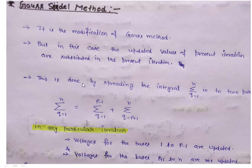This can be done by splitting the summation into two parts: q equal to 1 to p minus 1, plus q equal to p plus 1 to n. While doing the load flow using any method, we find the voltages at all the buses serially.